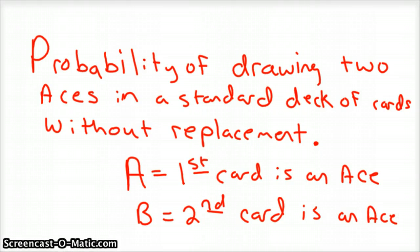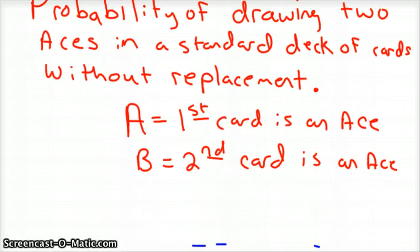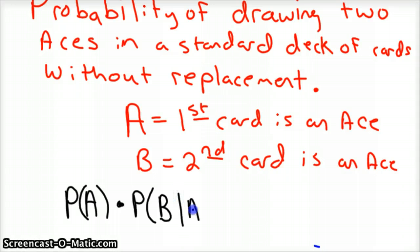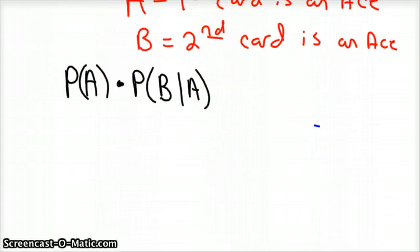Okay, so to calculate this, we need that formula. So the formula would be the probability of A, the first card is an ace, times the probability that the second card is an ace, given the first card was an ace. So I was kind of writing that as I said it so that you can follow the words that go with the symbols.